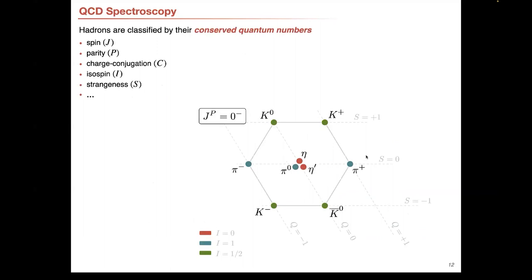In the case of QCD, hadrons are classified by their conserved quantum numbers — generally spin, parity, charge conjugation, and isospin and other flavor quantum numbers that may exist. Here's a simple example: the pions, etas, and kaons were observed early on and were instrumental in developing the early quark models. Here's the example of the pseudoscalars — all these particles have spin 0 and negative parity. They have different isospins shown in colors: the isoscalar etas, the isovector pions, and the isospinor kaons. They have different strangeness quantum numbers and different electric charges.